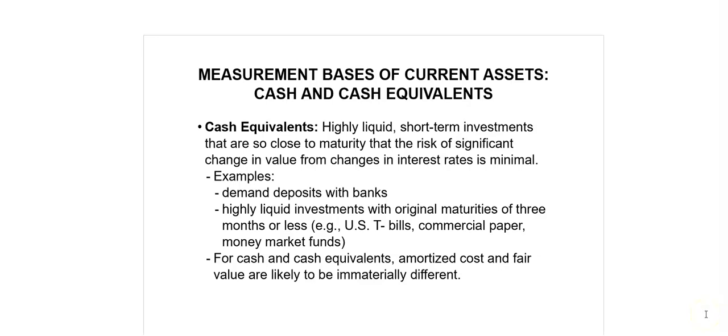Cash and cash equivalents exclude amounts that are restricted for use for at least 12 months. For all companies, the statement of cash flows presents information about the changes in cash over a period of time — it accounts for the changes between the opening and closing balance of cash for a company.